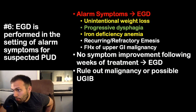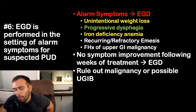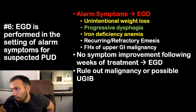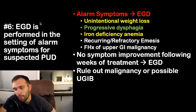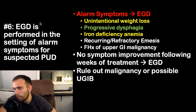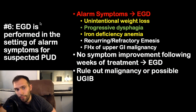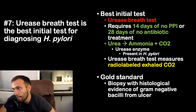Fact six: EGD (upper endoscopy) is performed in the setting of alarm symptoms for suspected peptic ulcer disease. Alarm symptoms include unintentional weight loss, progressive dysphagia, iron deficiency anemia (suggesting chronic blood loss or malabsorption), recurring or refractory emesis, and family history of upper GI malignancy. Non-alarm symptoms include epigastric pain, nausea, and bloating. Endoscopy can rule out malignancy, detect chronic bleeds, and definitively diagnose pathology via biopsy.